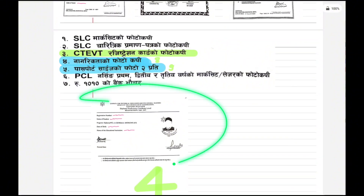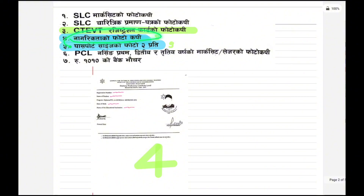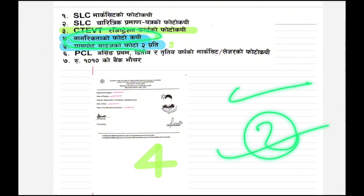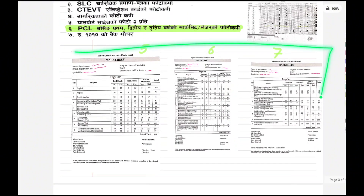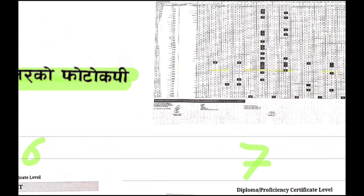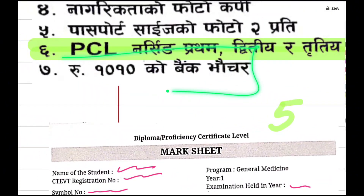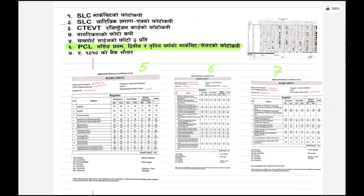There is a registration card. It's a photo, a photo of your passport size. And for PCL nursing it's a photo of your first year, second year, third year. You can use it as an option, as a product, as a subject — you can use it as a product in the 2010 banking voucher.